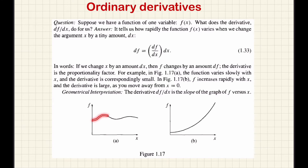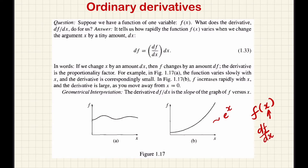This function varies with respect to x, approximately following an e raised to x formula. So df by dx will be very large in this case. The geometrical interpretation of the ordinary derivative is: the function f of x depends only on one variable, and we get the full derivative df by dx. The geometrical interpretation is that df by dx is the slope of the graph of f versus x.